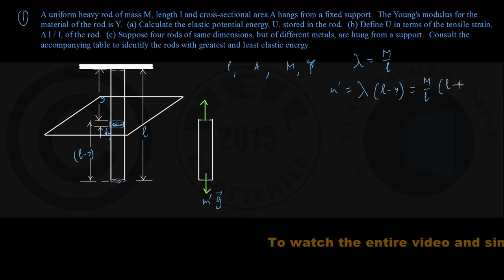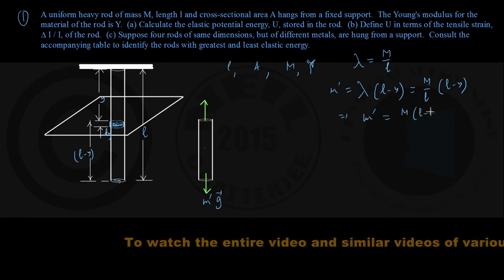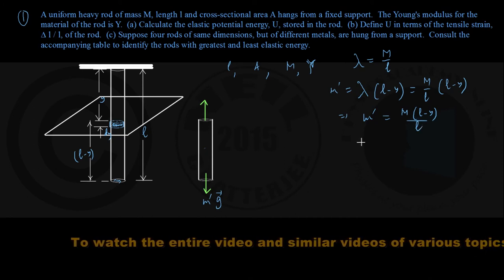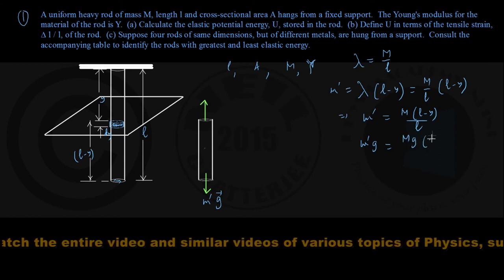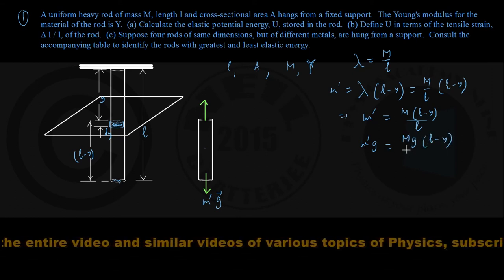So, it is M by L into L minus Y and we are getting here mass of the part is M dash, that is M into L minus Y by L, and correspondingly the force of gravity acting on it has a magnitude of capital M into G into L minus Y by L.